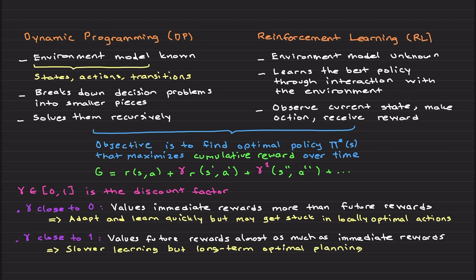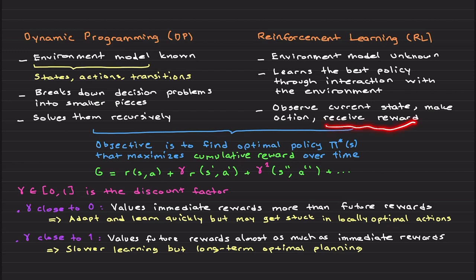In dynamic programming, the environment is known, meaning the states, actions, and transitions are known. Reinforcement learning is predicated on dynamic programming, so we will first learn dynamic programming in the next video, and then move forward to reinforcement learning. In reinforcement learning we don't need to assume we know the environment — the environment can be unknown. In dynamic programming, the idea is to break down decision problems into smaller pieces and solve them recursively. In reinforcement learning, it learns the best policy through interaction with the environment: you do something, get a reward or penalty, observe the current state, make an action, receive a reward, and over time learn the best optimal strategy.